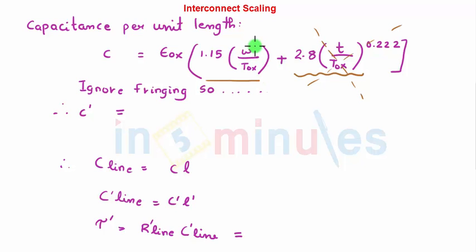What is going to happen after scaling is we know that W is scaled down by a factor of S. So C' is equal to εox × 1.15 × W'. W' is nothing but W/S. So I am straight away putting that. Tox has not changed and I have ignored this term. So I can easily say that my C' is reduced by a factor of S compared to C. Correct?